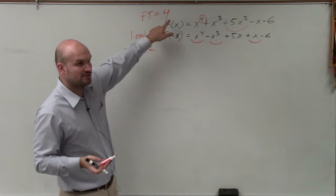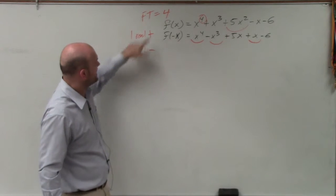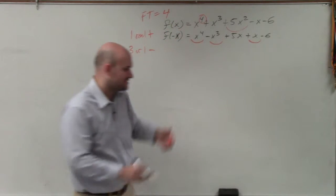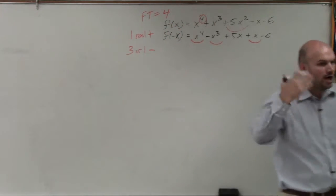3 negative, 1 positive equals 4. 1 positive, 1 negative, and 2 complex gives you 4, correct? So that makes sense. That's what Descartes' rule of signs helps you guys do.